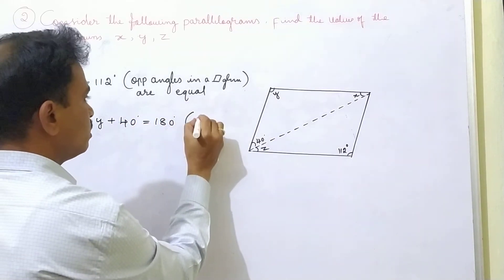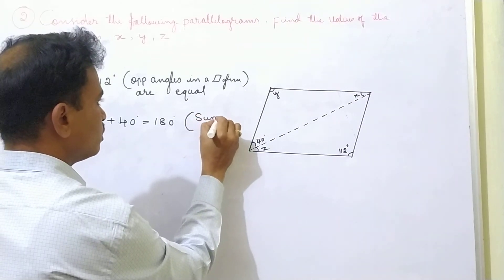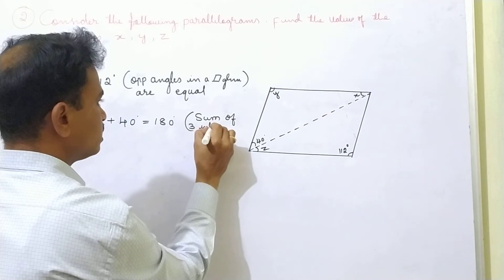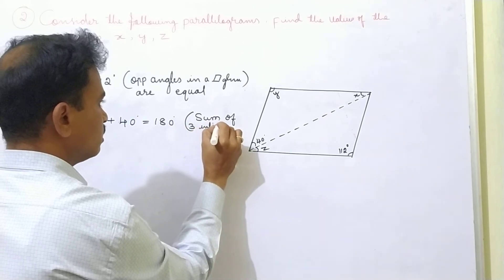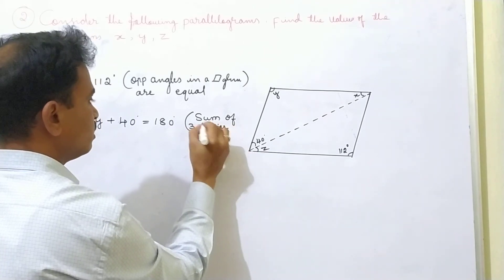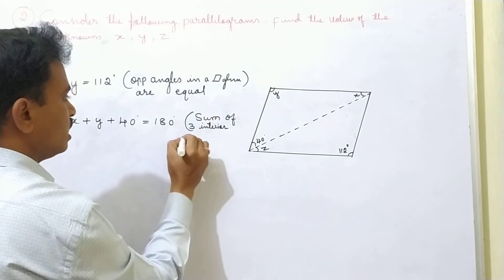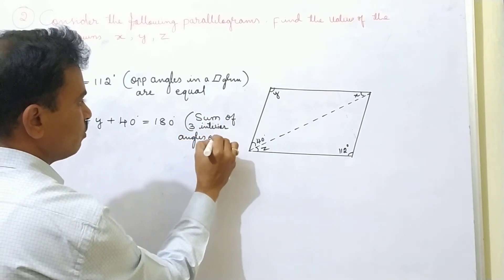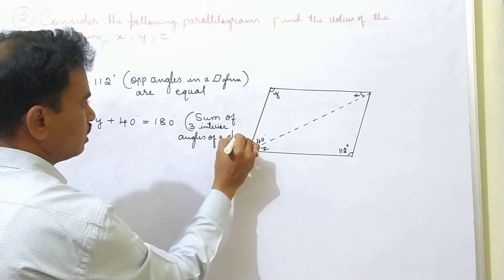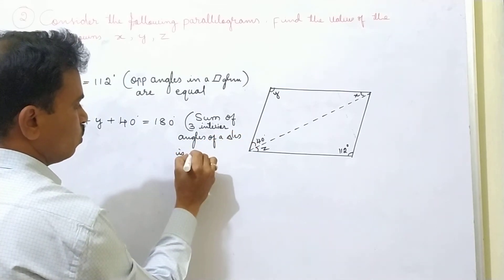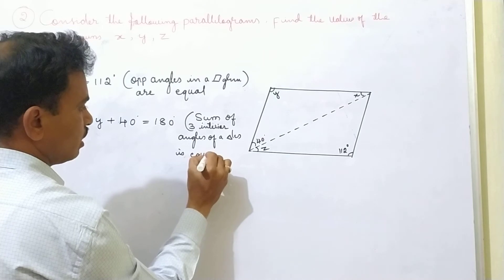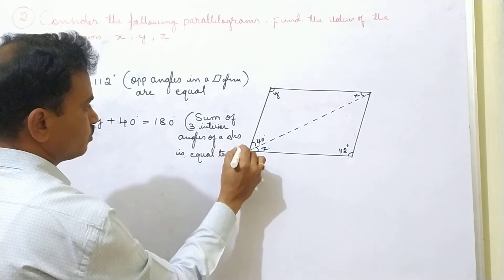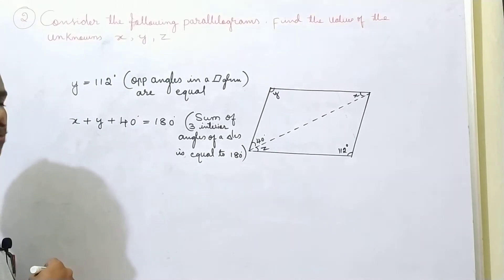That means the sum of three interior angles of a triangle is equal to 180 degrees.